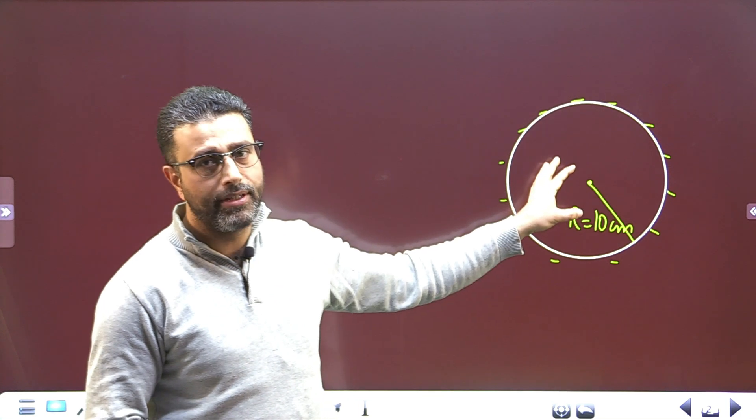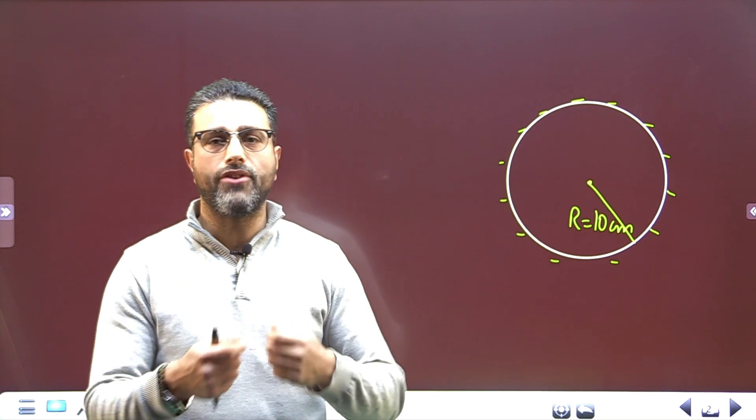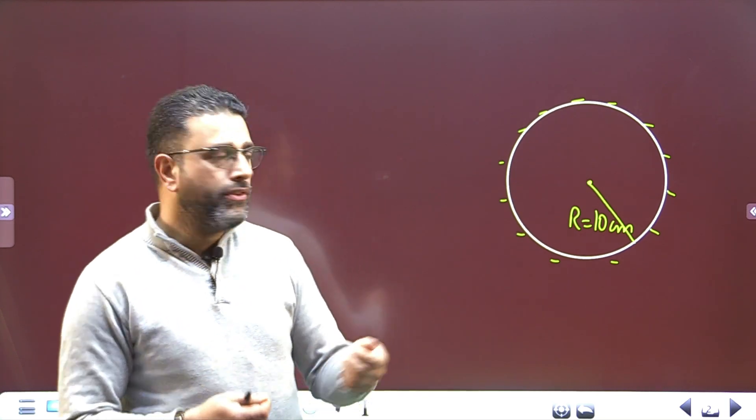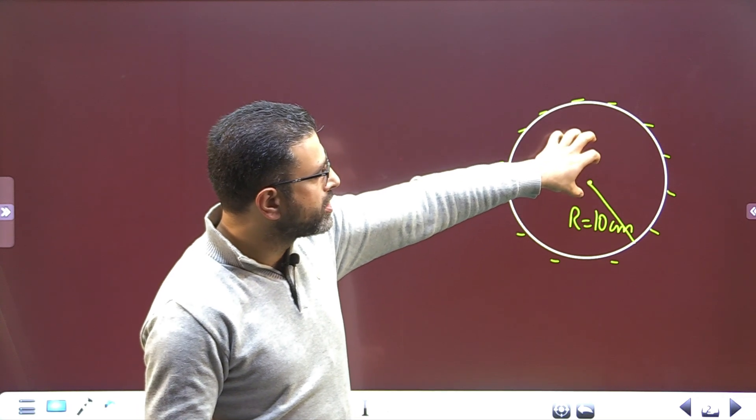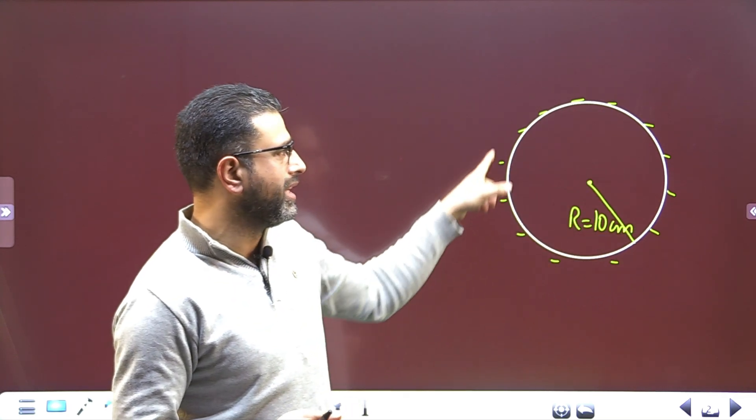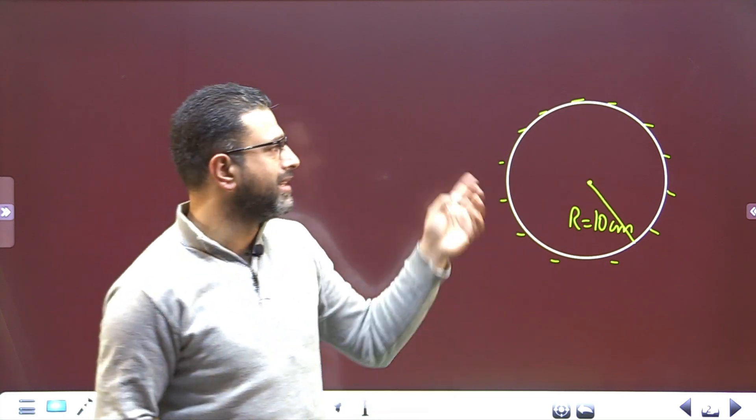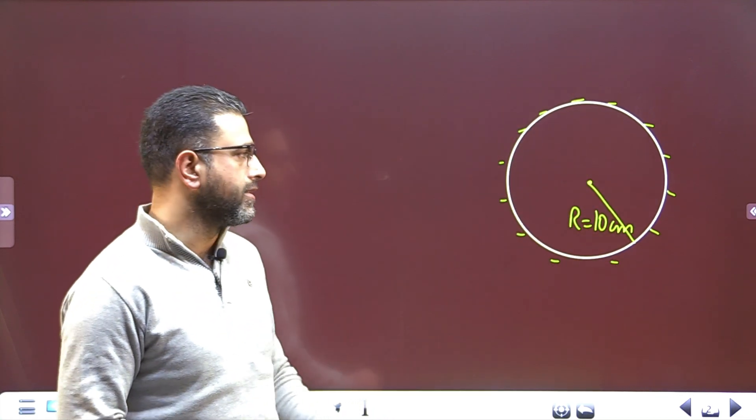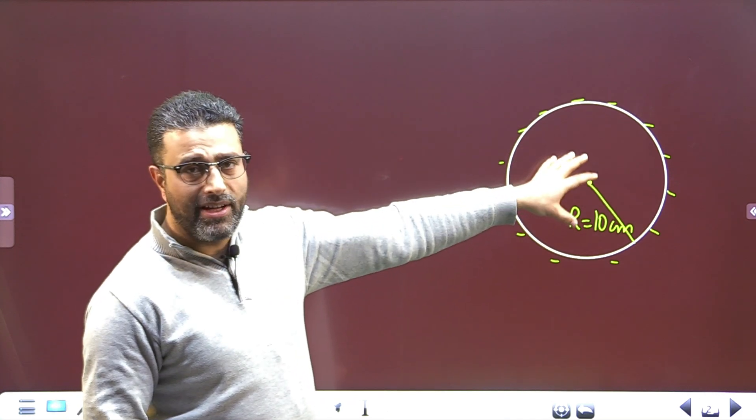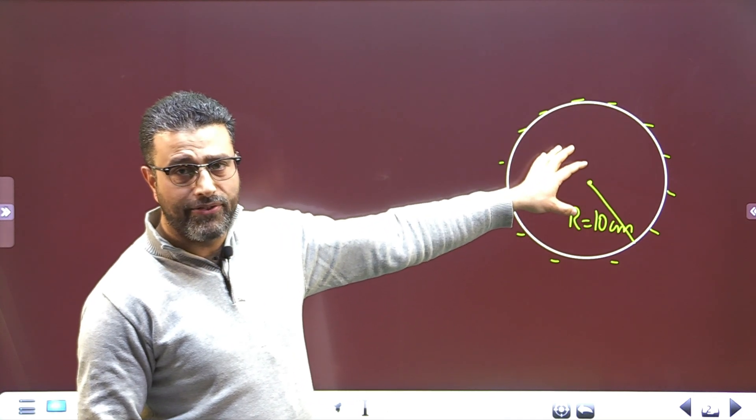If we have a conducting solid sphere, since charges are free to move in a conductor, these charges because of mutual repulsions will all go to the surface. They get distributed uniformly on the surface from spherical symmetry.